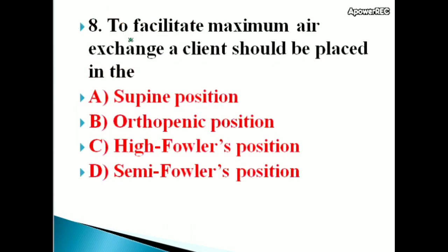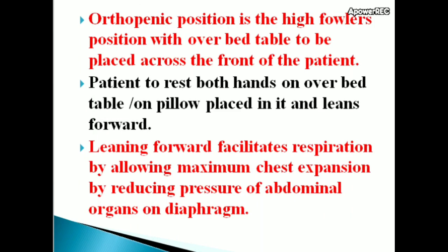Next question: To facilitate maximum air exchange, a client should be placed in which position? Options: supine, orthopneic, high-Fowler's, semi-Fowler's. Correct answer is orthopneic position. In orthopneic position, the patient is in high-Fowler's with an overbed table placed across the front; the patient rests both hands on a pillow on the table and leans forward, facilitating respiration by allowing maximum chest expansion and reducing abdominal pressure on the diaphragm.